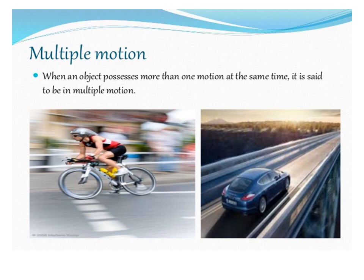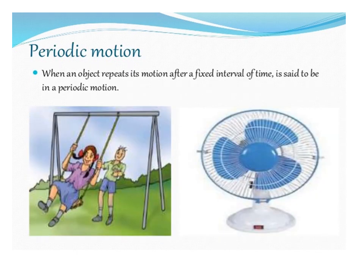Multiple motion: when an object moves with more than one type of motion at the same time, it is said to be in multiple motion.